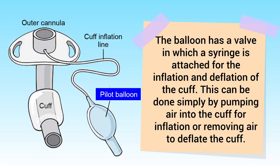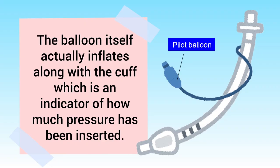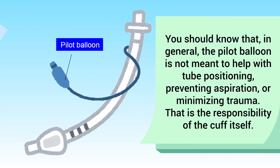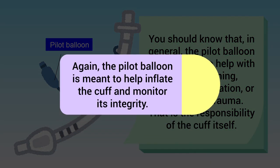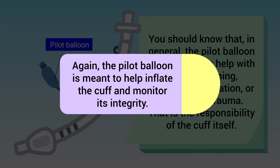Inflation and deflation can be done simply by pumping air in for inflation or removing air to deflate the cuff. The balloon itself actually inflates along with the cuff, which is an indicator of how much pressure has been inserted. In general, the pilot balloon is not meant to help with tube positioning, preventing aspiration, or minimizing trauma — that is the responsibility of the cuff itself. The pilot balloon is meant to help inflate the cuff and monitor its integrity.